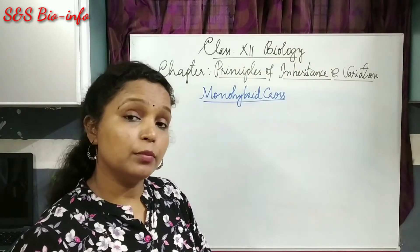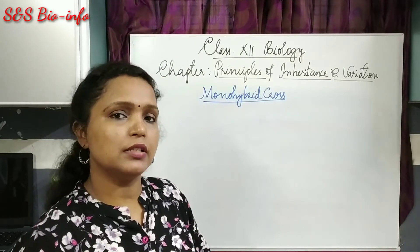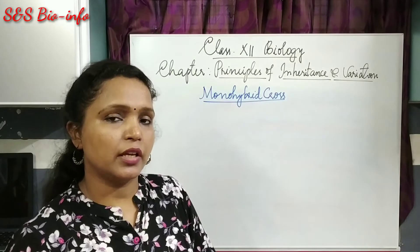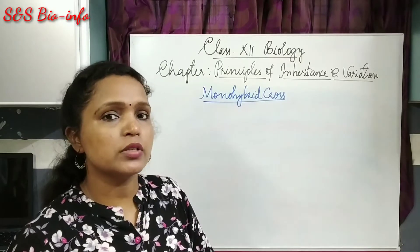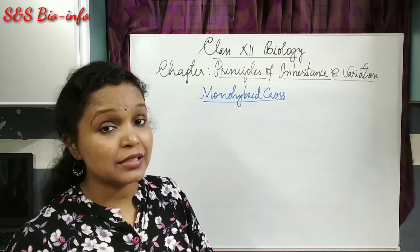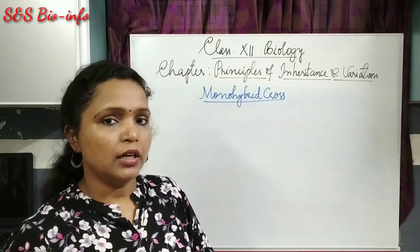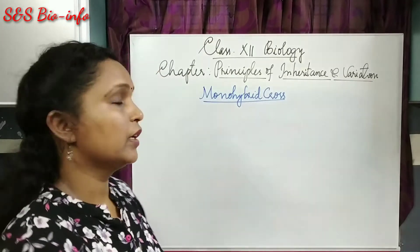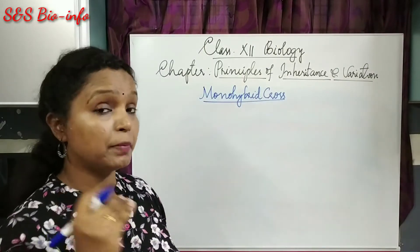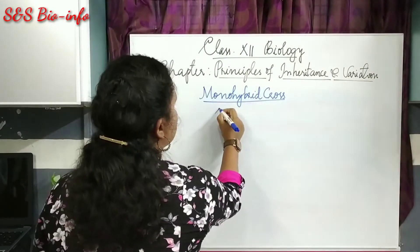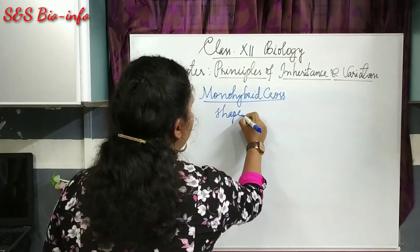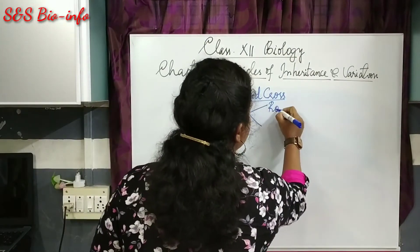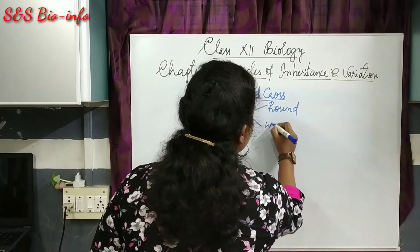To learn more about the laws, we need to consider a monohybrid cross. A monohybrid cross is a cross in which two parents are crossed with one pair of contrasting or opposing traits. Here, let's consider the character of seed shape in pea plants. Shape is a character, and it has two opposing traits: round and wrinkled.